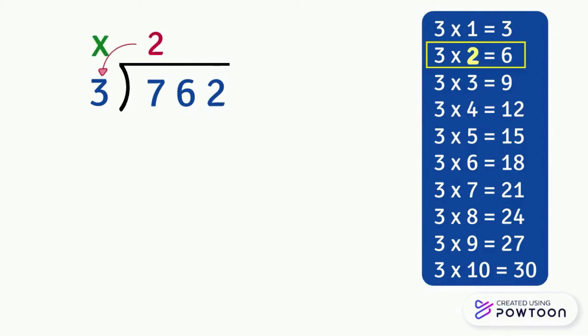Then we multiply 2 by 3: 2 times 3 equals 6. We write the 6 below the 7 and we subtract 7 minus 6 equals 1. After we subtract, the result should be less than the divisor.